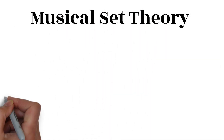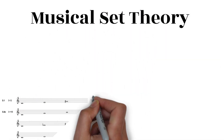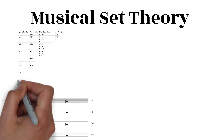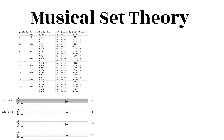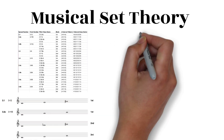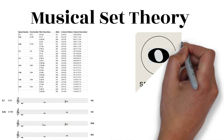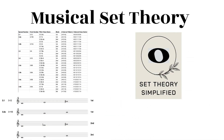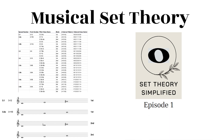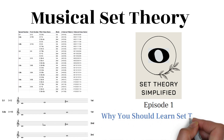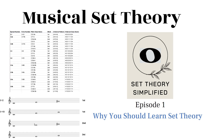Musical set theory is a system for labeling and understanding all chords and scales. In this first episode of the Set Theory Simplified series, we'll be comparing traditional music theory to set theory to understand why set theory is worth learning.